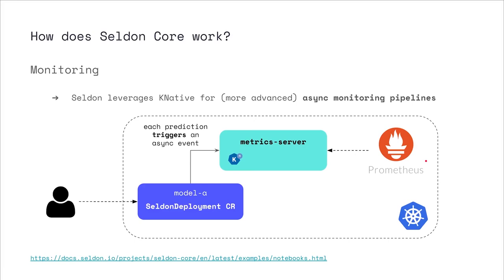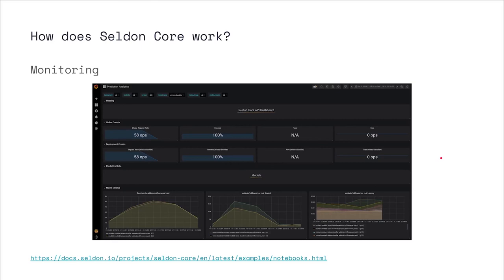Diving into this architectural pattern: every time a user sends a request, inference happens as normal, and under the hood it kicks off an event asynchronously. This event can be picked up by any kind of custom metric server, which then reports those metrics back to Prometheus. With all these metrics in Prometheus, we can use something like Grafana to visualize them, or Alert Manager — which ships with Prometheus — to alert us whenever any threshold of our model performance has been reached, like a high number of outliers.